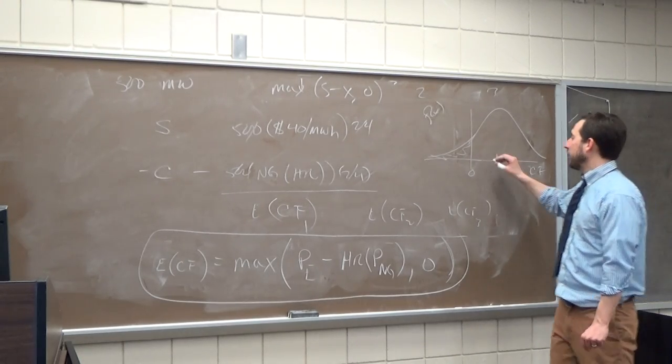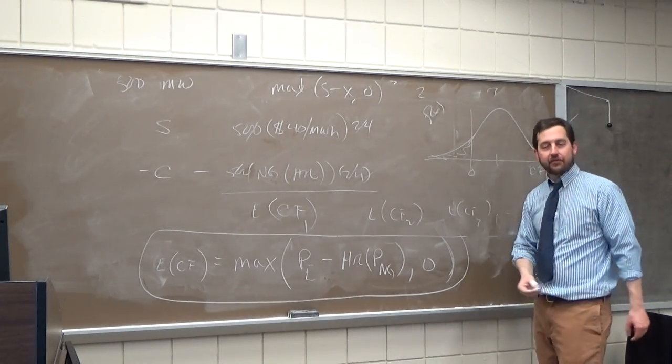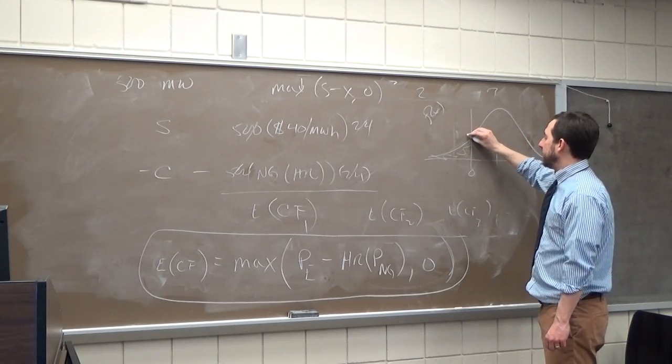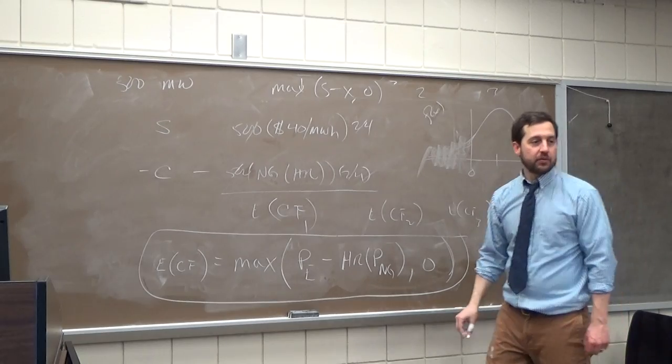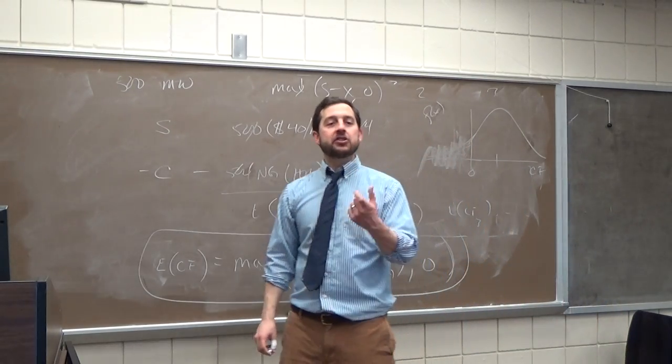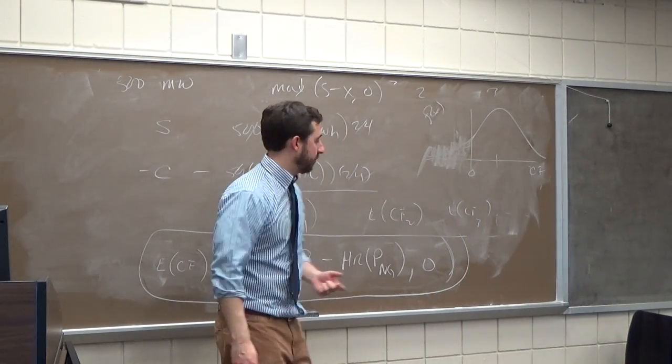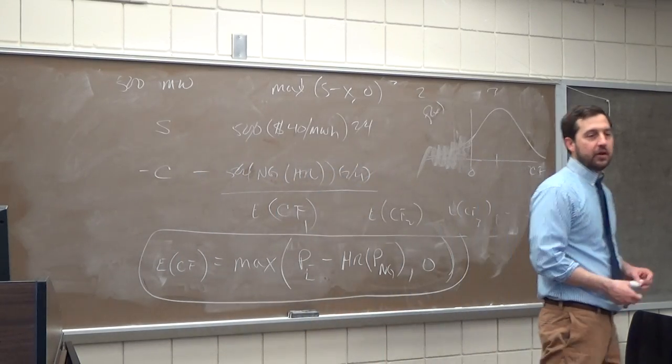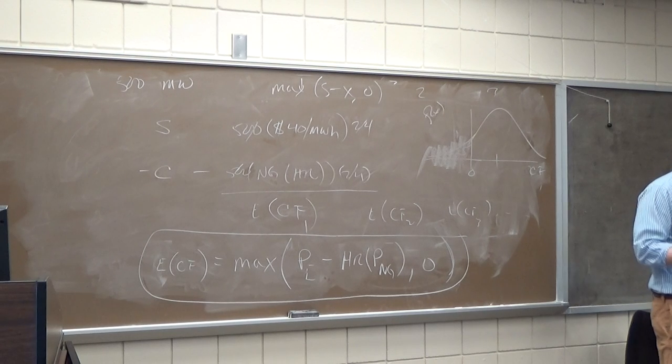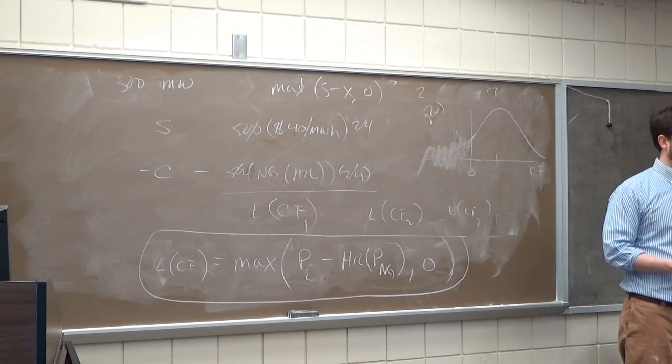So in other words, what we realize, going in capital budgeting after 1980s and so forth, is that we need to get rid of this portion of the distribution. Or business managers would get rid of that portion of the distribution, so what we're really doing here is an option. So we need to value the power plant with options methodology. Does that make sense?